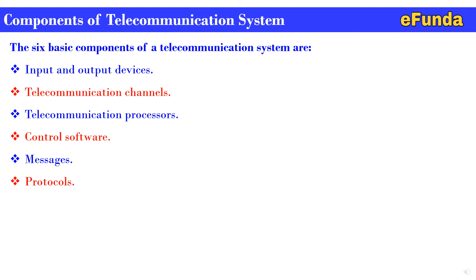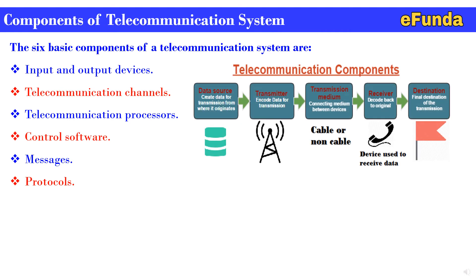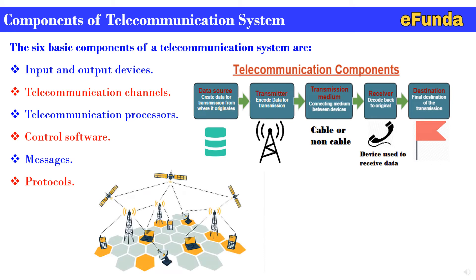For better understanding, we will see the telecommunication components in a block diagram form. Data source creates data for transmission from where it originates. Transmitter encodes data for transmission. Transmission medium is the connecting medium between two devices. Data receiver decodes back to the original destination, which is the final destination of the transmission system. One can also refer to a point-to-point communication figure, showing a path from telephone to tower, tower to satellite, satellite to another satellite, satellite to tower, and reaching another location.